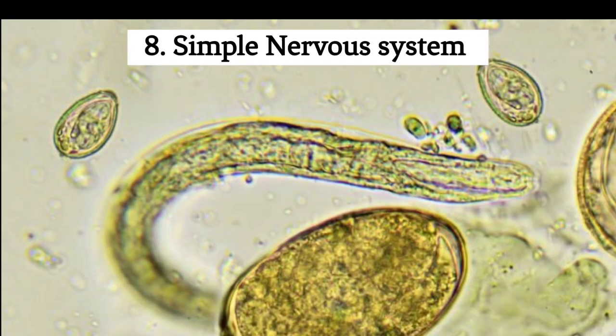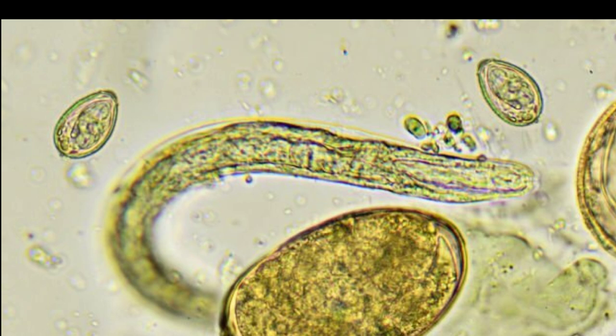8. Simple nervous system. Nematodes have a relatively simple nervous system consisting of a dorsal and ventral nerve cord with ganglia that coordinates sensory and motor functions.